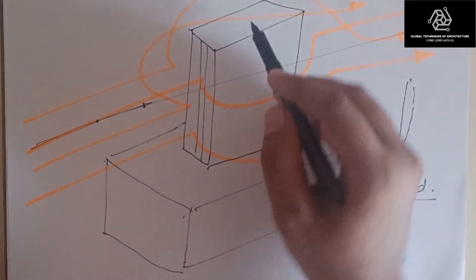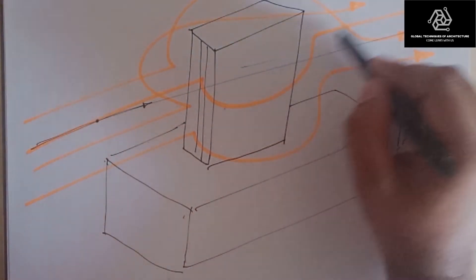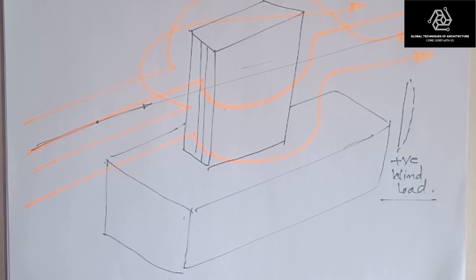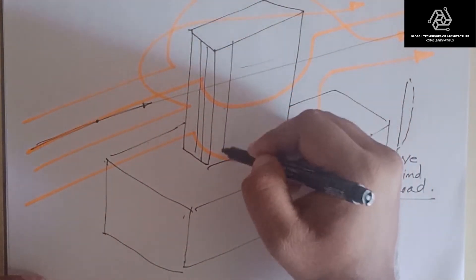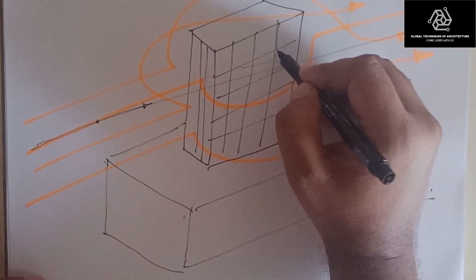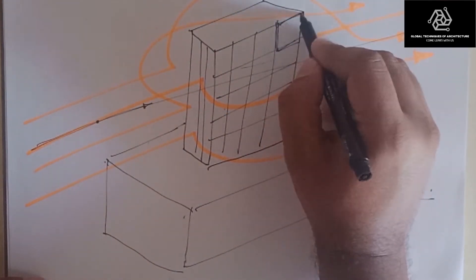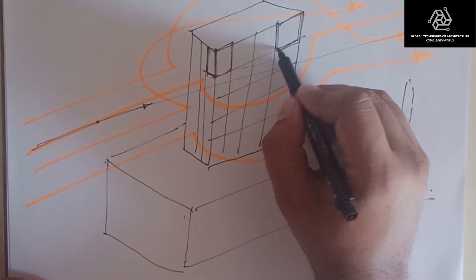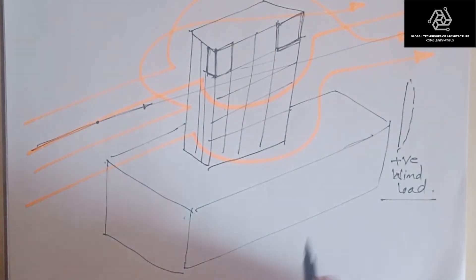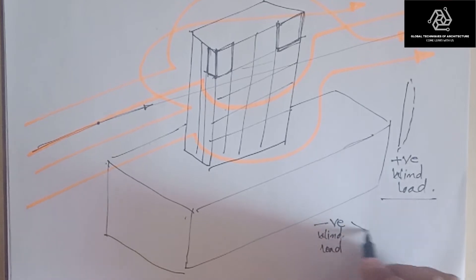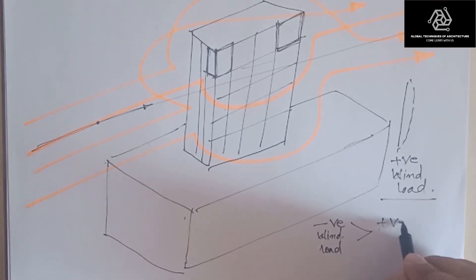When the wind goes around the side elevations, it tries to lift and drag all the panels on those elevations. There is a lift-and-drag phenomenon at the corner panels, so when we design corner panels there are much more concerns. The negative wind load is always greater than the positive wind load.